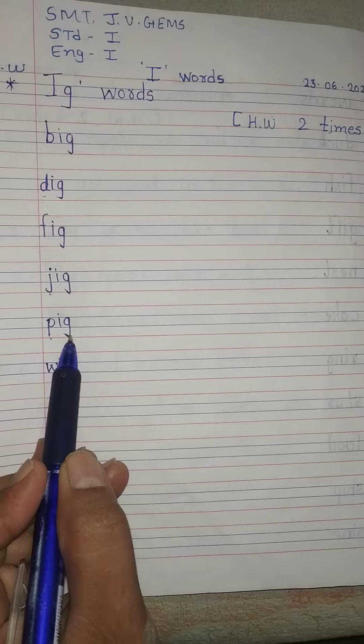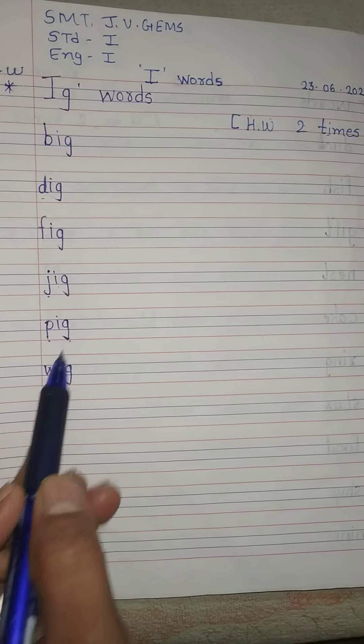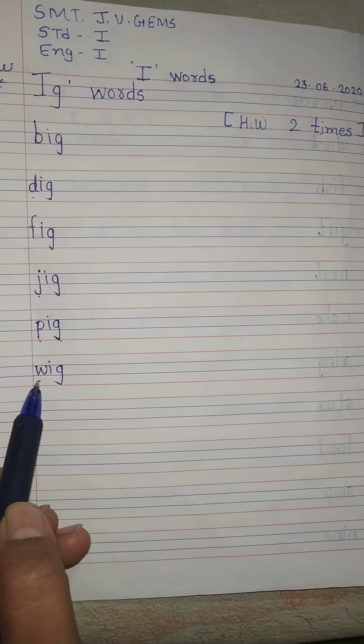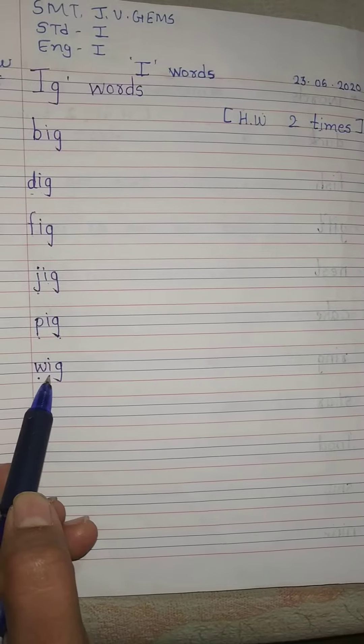P says P. I.G. pig. P.I.G. pig. W says W. W. I.G. wig. W.I.G. wig.